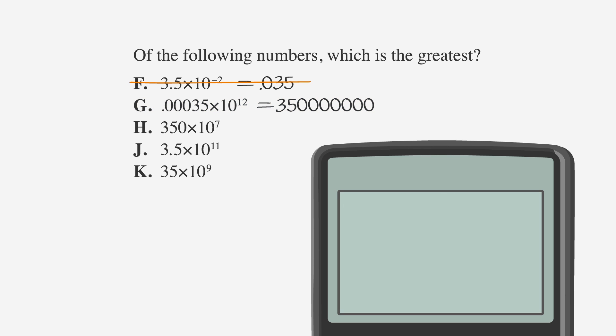Next, using the calculator, we'll input choice H, which is 350 times 10 to the 7th. Press enter. We find that's 35 followed by 8 zeros. If you write this out and line it up with the previous answer, it's obvious that it's bigger than choice G, so let's cross out answer G.